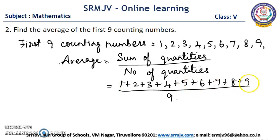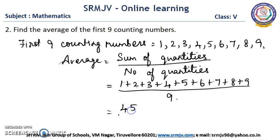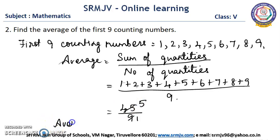Here: 1 plus 9 is 10, 2 plus 8 is 10, 3 plus 7 is 10, 4 plus 6 is 10 — that is 4 pairs, 4 times 10 is 40. 40 plus 5 is 45. So that is 45 divided by 9. We can reduce the numbers by 9. In the 9 table, 5 times 45. So the average of the first 9 counting numbers is 5.